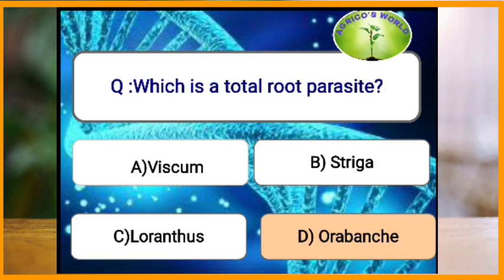Which of the following is a total root parasite? The complete root parasite is Orobanche, and the incomplete root parasite is Striga, whereas the complete stem parasite is Cuscuta and the incomplete stem parasite is Loranthus. So the answer is Orobanche is the total root parasite.